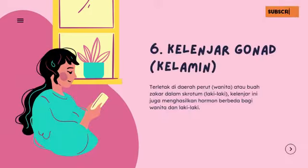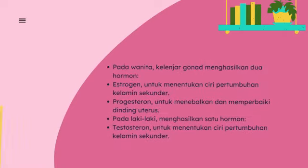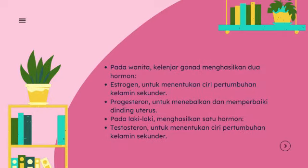Kelenjar gonad terletak di daerah perut wanita atau buah zakar dalam skrotum laki-laki. Kelenjar ini menghasilkan hormon berbeda bagi wanita dan laki-laki. Pada wanita, kelenjar gonad menghasilkan dua hormon yaitu estrogen dan progesteron. Dan pada laki-laki menghasilkan satu hormon yaitu testosteron.